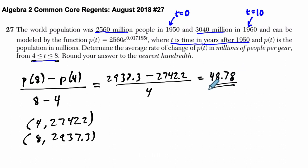So per year, the average rate of change is about 48 million people per year. Okay, so I hope that helped.